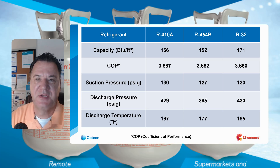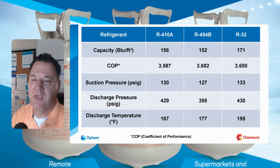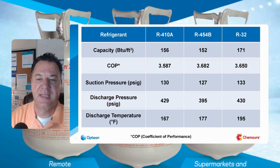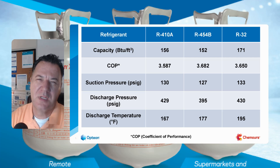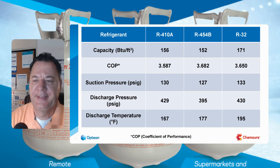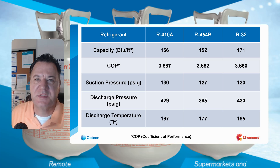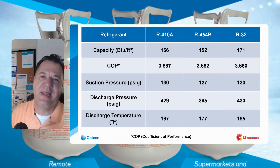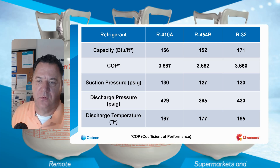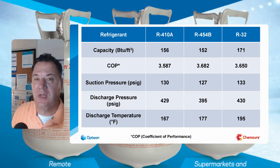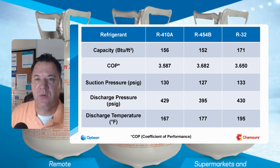Suction pressure — everyday stuff, boots on the ground. If you're at 130 on the 410A low side, you're going to be around 127 on 454B and then 133 on R32. On the high side or discharge pressure, if you're at 429 on 410A, you're going to be right around 395 on the R454B and then 430 on R32. We're going to run a little higher pressure on R32 because there's a pressure-temperature relationship and R32 runs just a little bit warmer.